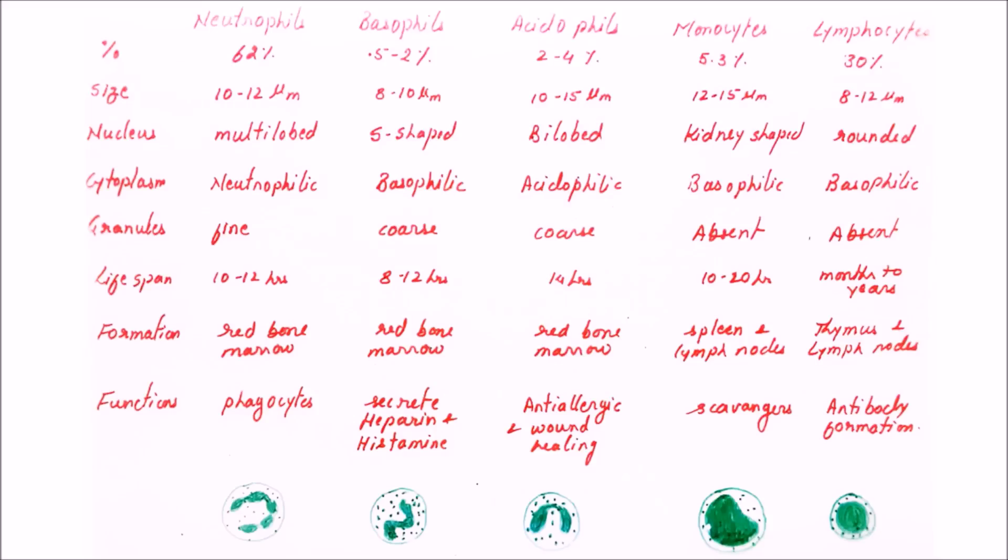We will compare them on the basis of percentage, which is the first point on the table. Neutrophils are the maximum type of WBCs or leukocytes; they make up about 62%. Followed by them are lymphocytes which make 30%, and minimum are basophils which make only 0.5 to 2%. Size-wise, their size varies from about 8 to 10 or 15 micrometers, so they're smaller in size.